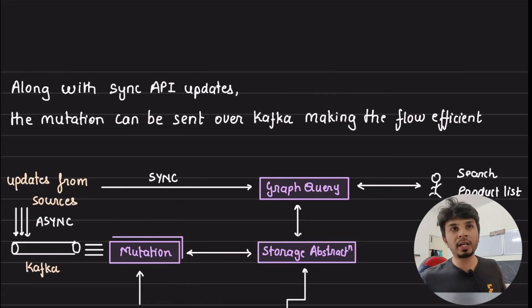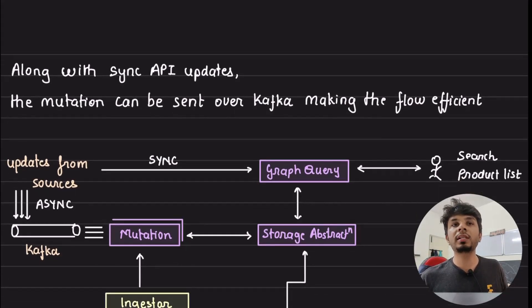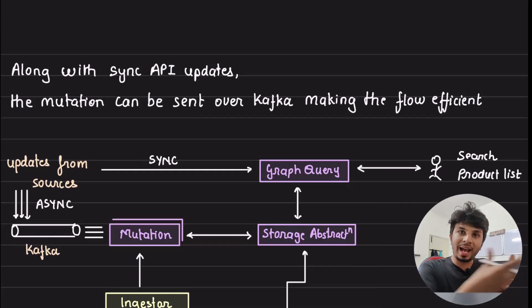This is where what storage mutator does is it exposes, like, it takes input from Kafka. Now anyone who wants to update something in a specific format can put a message into Kafka. This mutation, this storage mutation, accepts those messages and updates the knowledge graph.